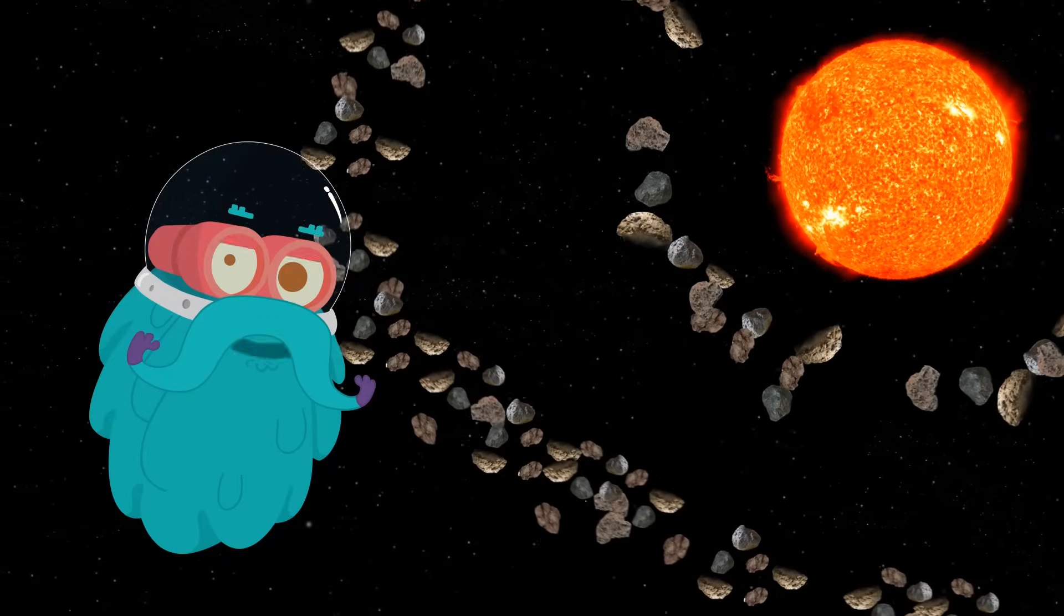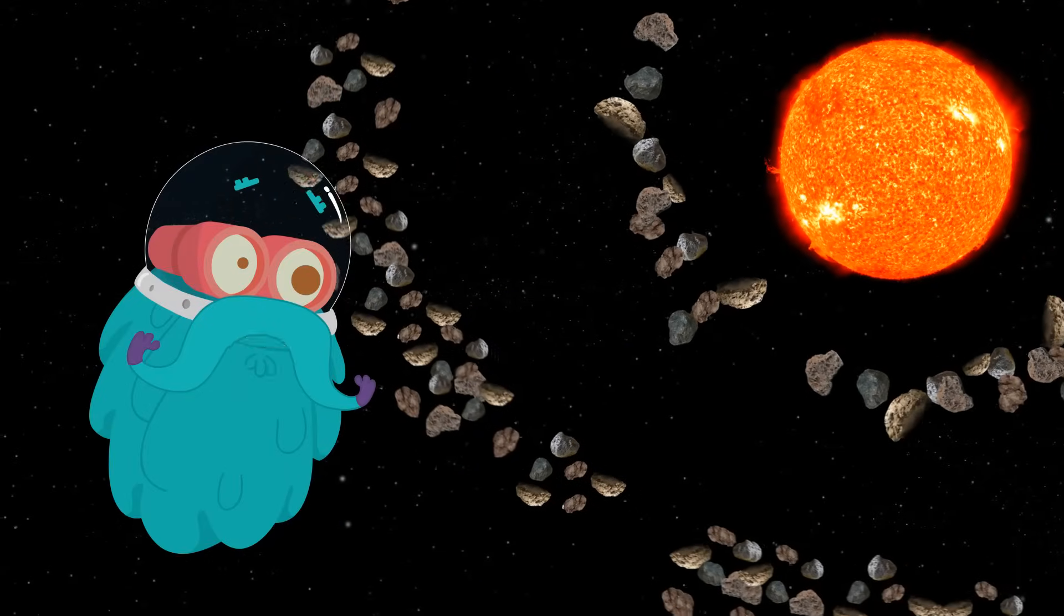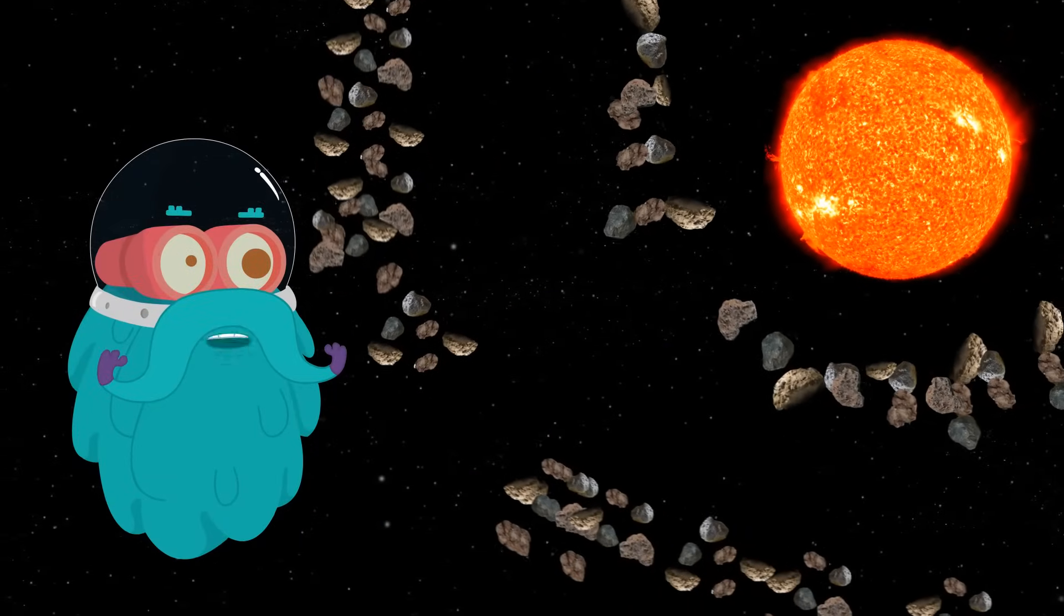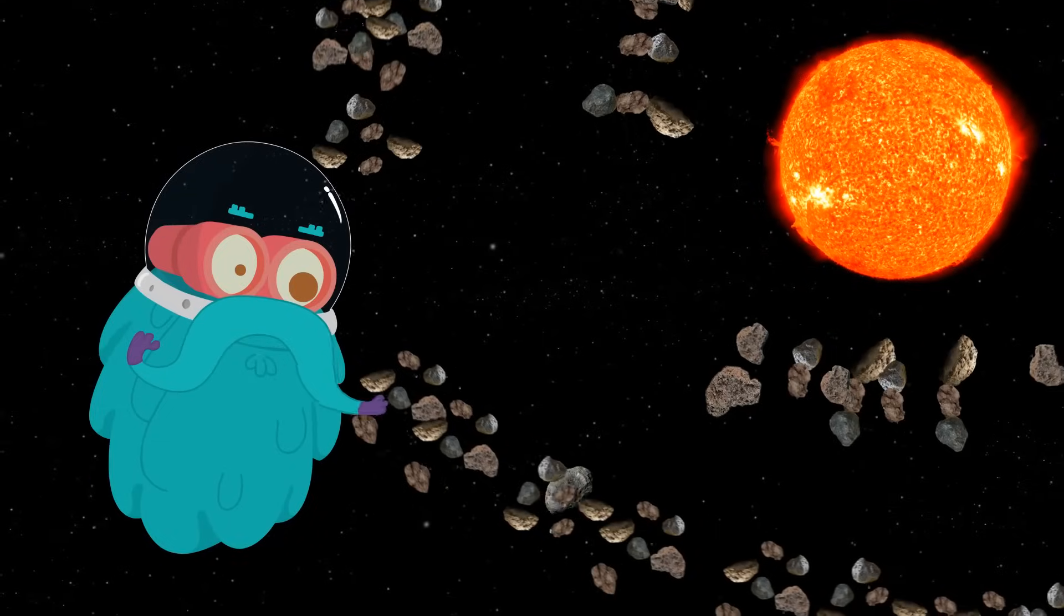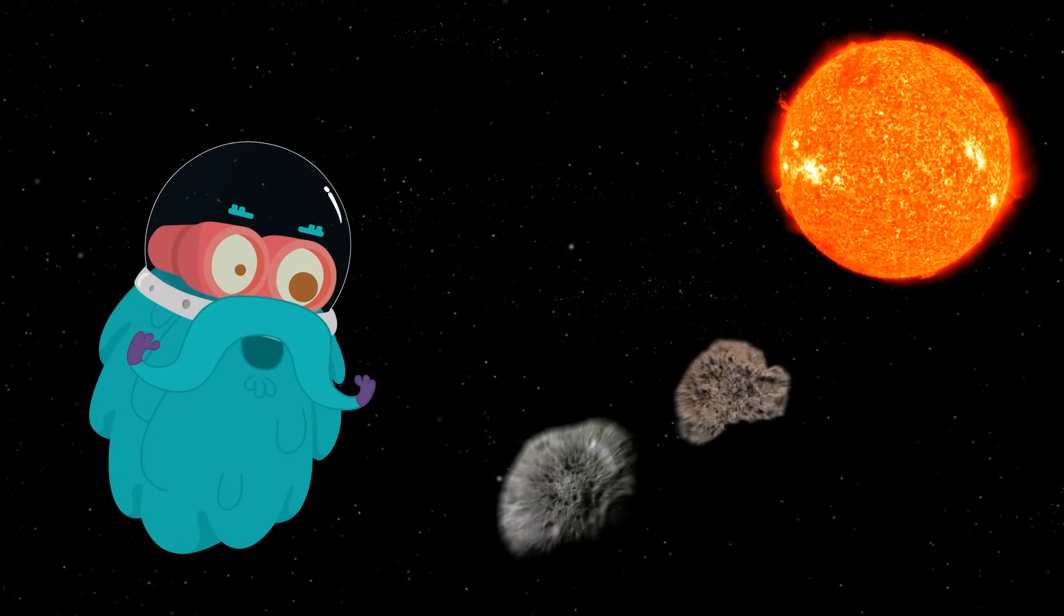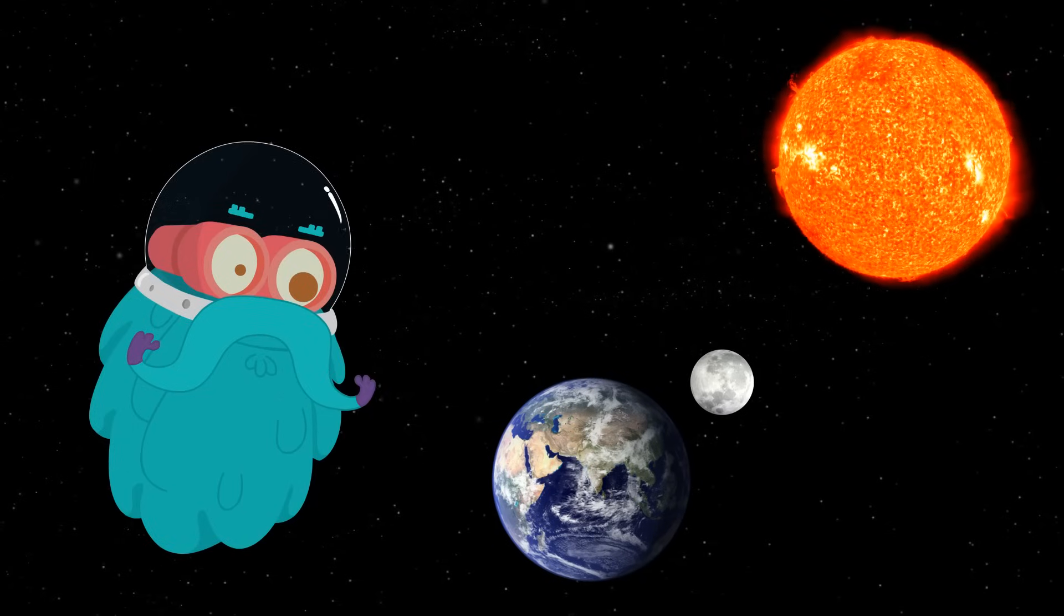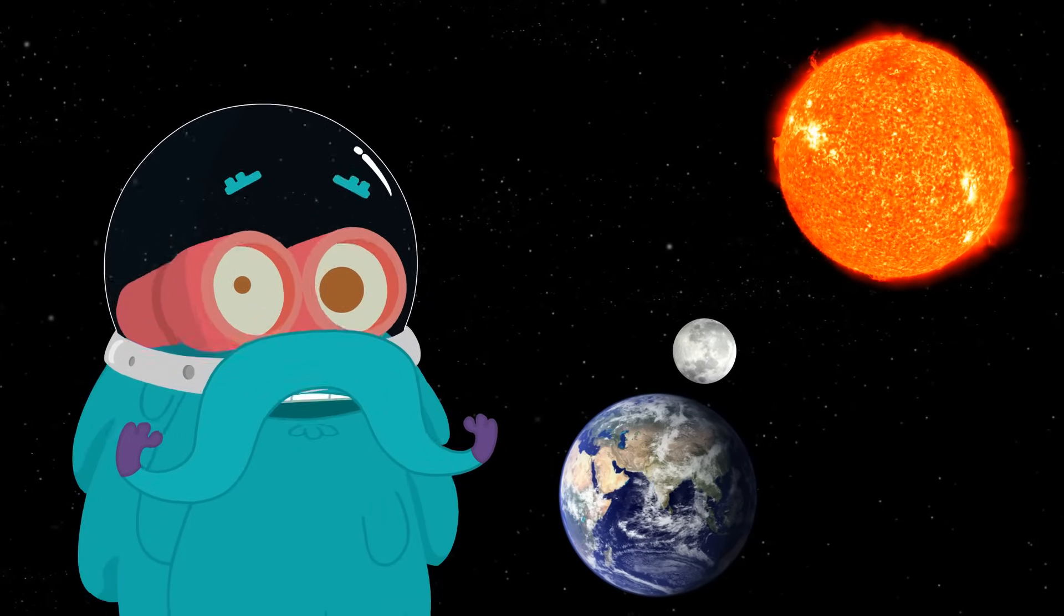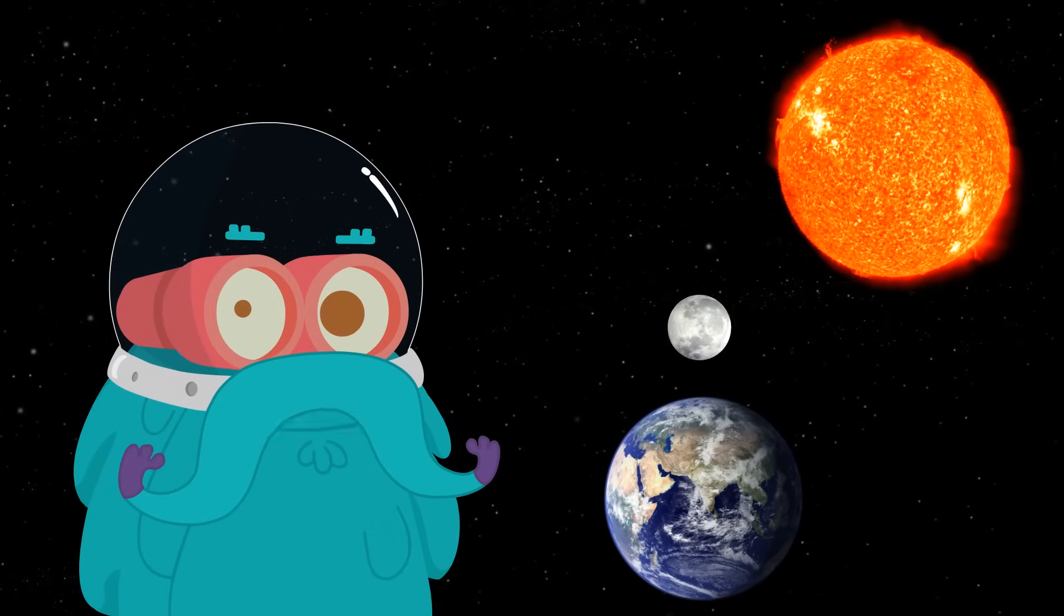There were infinite number of particles that began to stick together and formed clumps. Some clumps got bigger and bigger forming planets and moons. Aha, so now you know how the planets were born, isn't it?